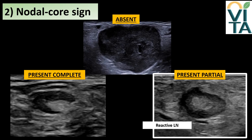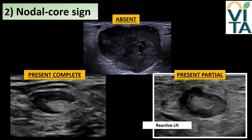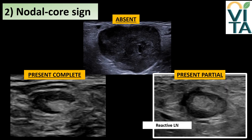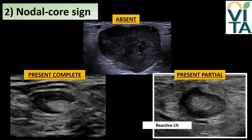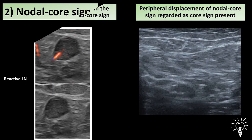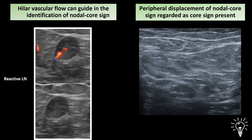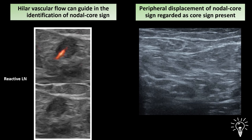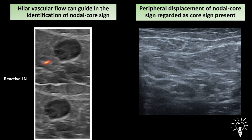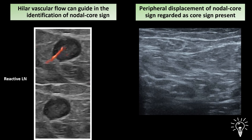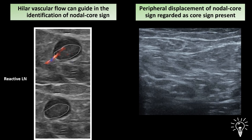In particular, on the right, thickening of the hypoechogenic cortex due to a reactive process has compressed the hilum, generating a partial nodal core sign. Sometimes identification of the nodal core sign can be challenging. In these cases, color assessment can be helpful — for instance, the longitudinal hilar vessel can guide you to the potential place of the nodal core sign, as seen in the dotted circle around the medulla.